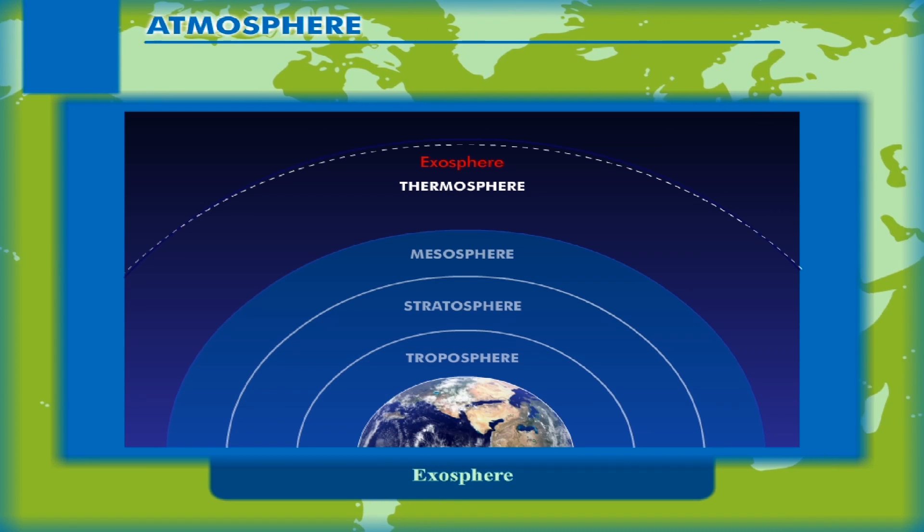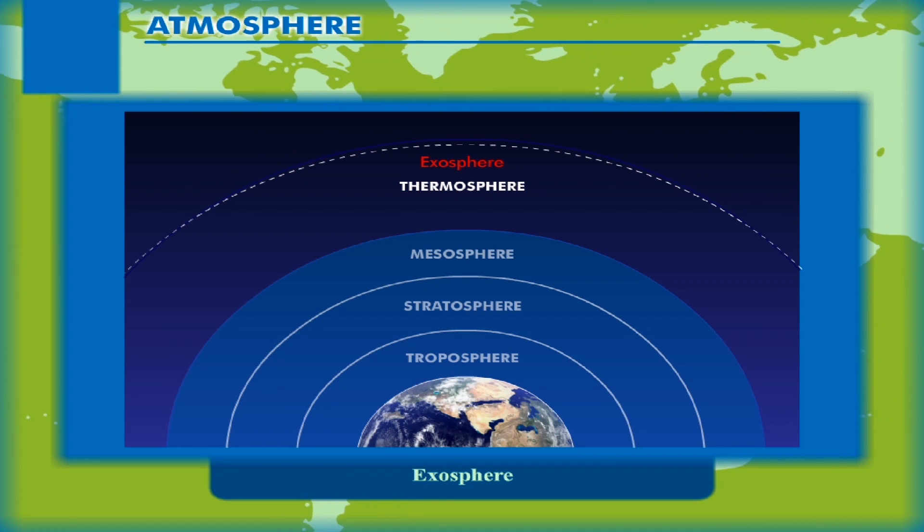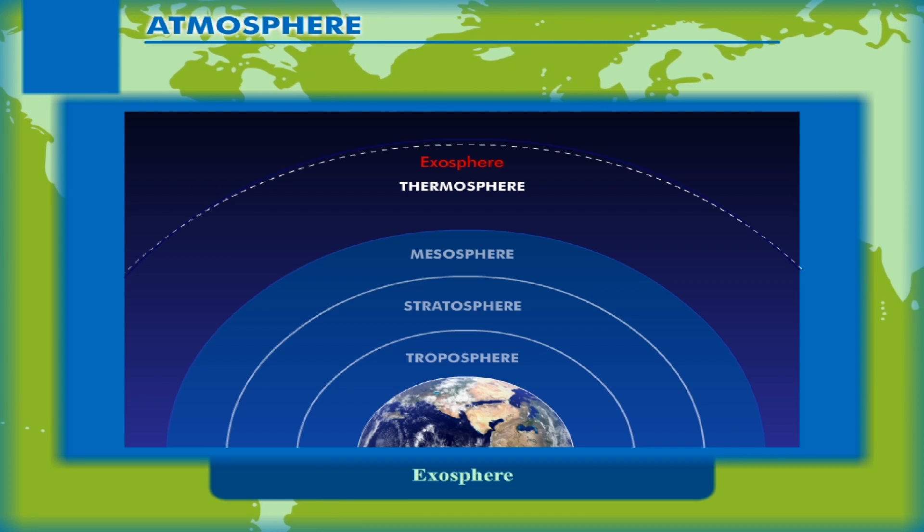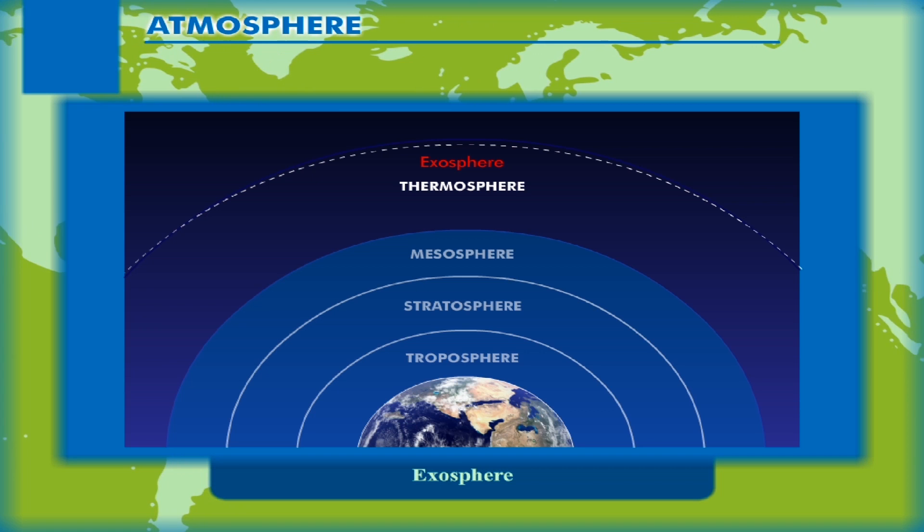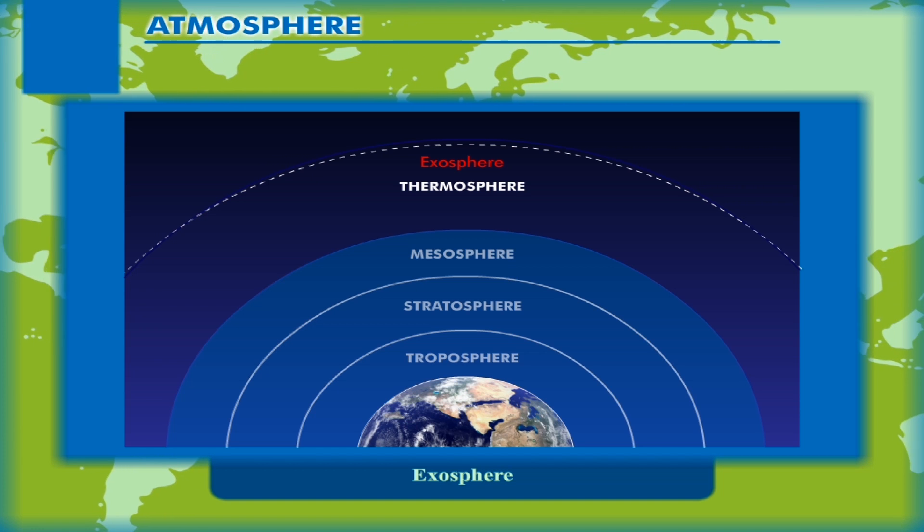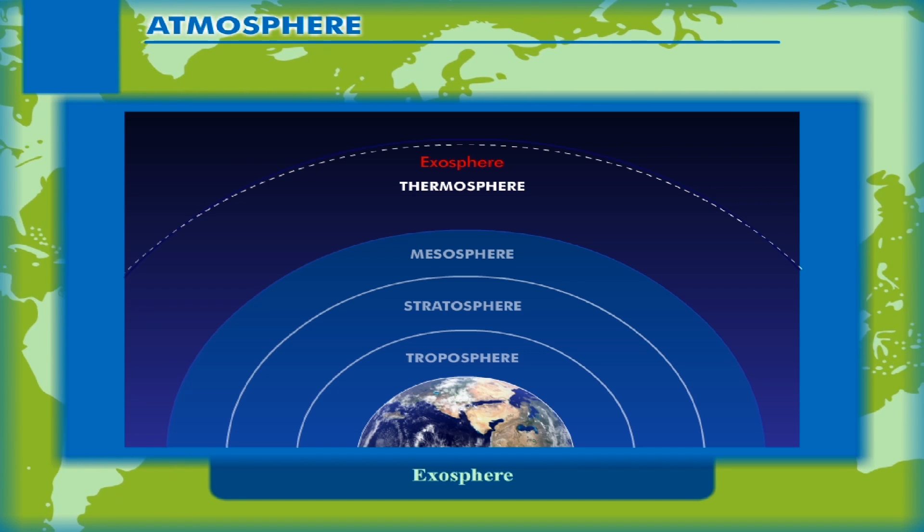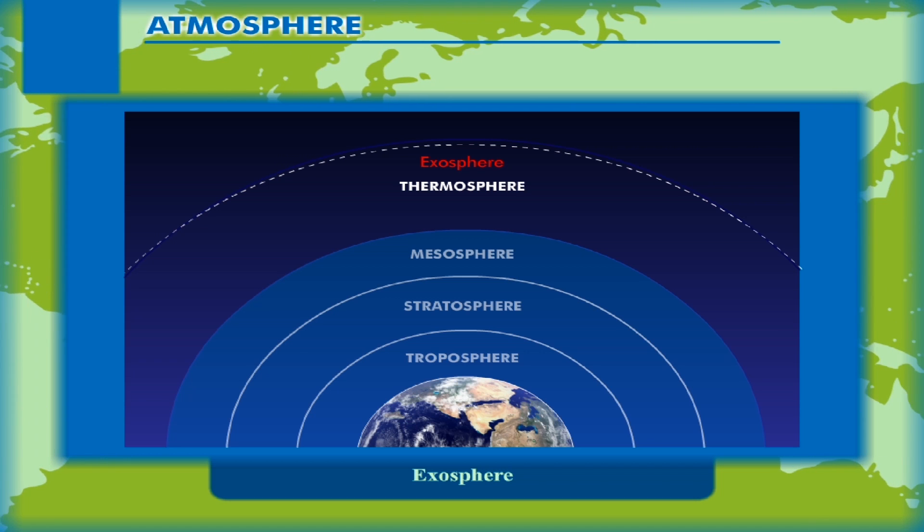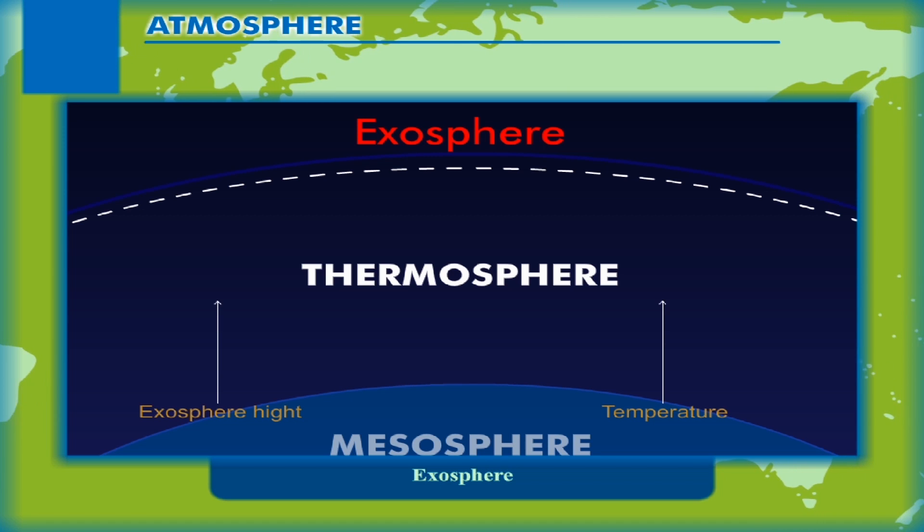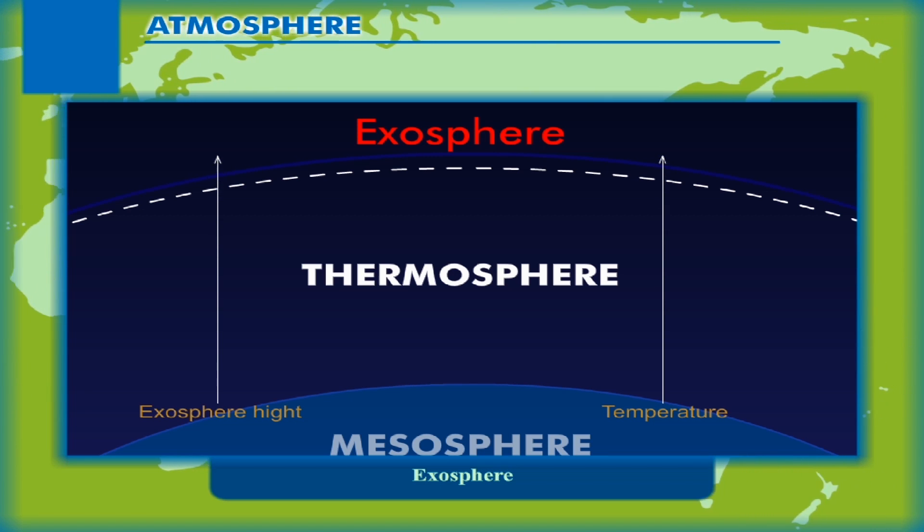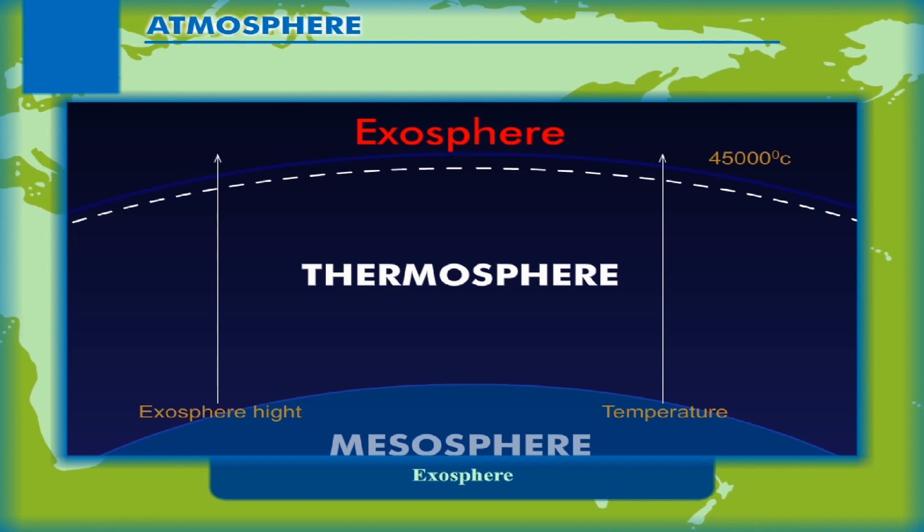Exosphere: The outermost layer of the atmosphere is called exosphere. The air thins in this sphere until it ultimately merges into outer space. The temperature increases rapidly in this layer because of solar radiation. The temperature increases with increase in height and may reach up to 4500 degrees Celsius at its outer limit.